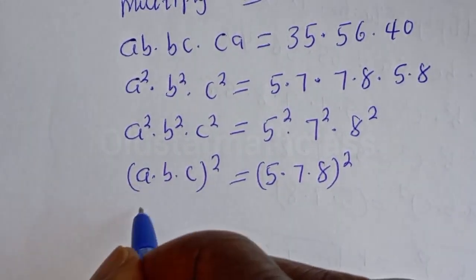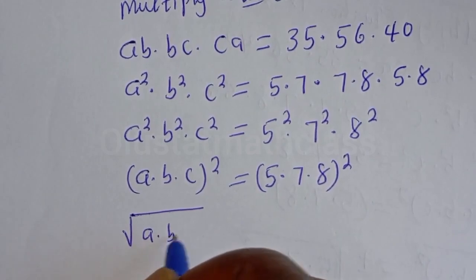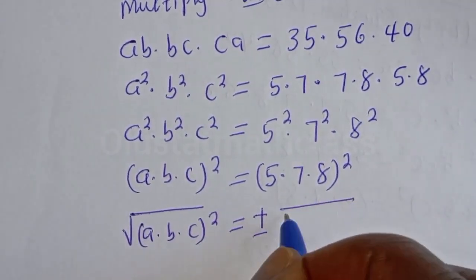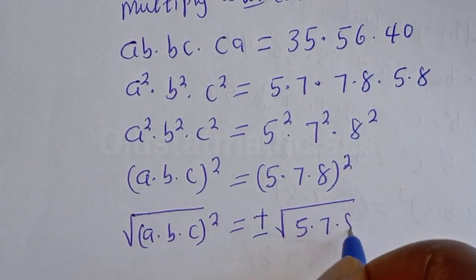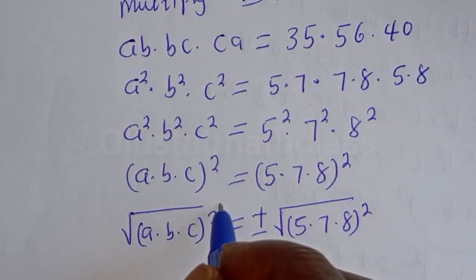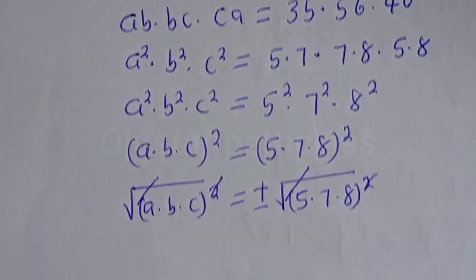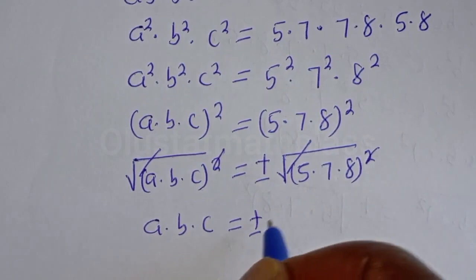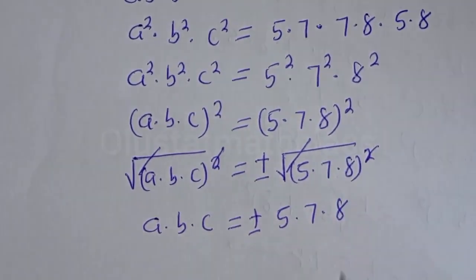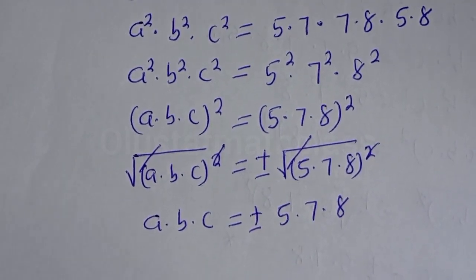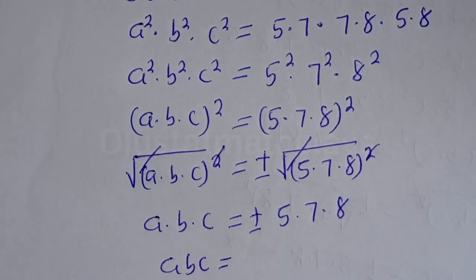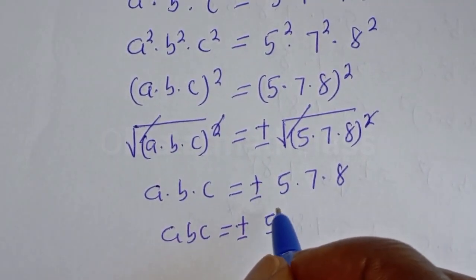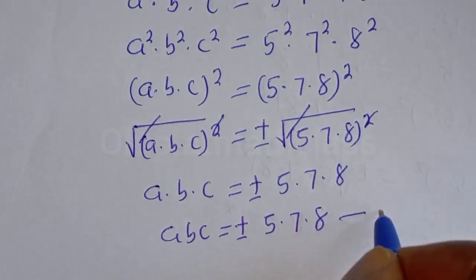Let's take the square root of both sides. The square root of (A × B × C) squared equals plus or minus the square root of (5 × 7 × 8) squared. The squares cancel on both sides, giving A multiplied by B multiplied by C is equal to plus or minus 5 multiplied by 7 multiplied by 8. Therefore ABC equals plus or minus 5 × 7 × 8. Let's call this equation 4.